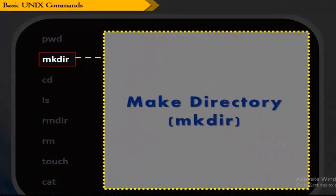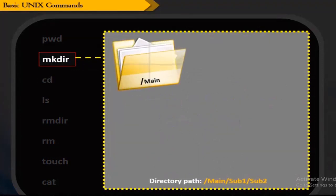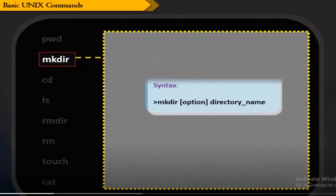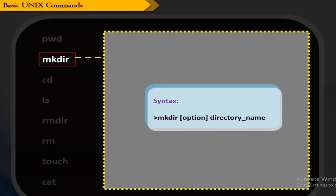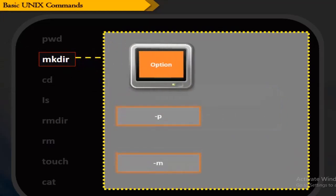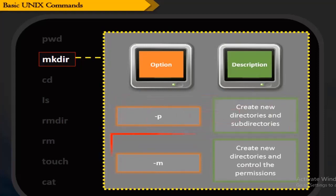Make directory is called mkdir. This command is used to create new directories and can also be used to create sub-directories. The syntax is: mkdir [directory name]. The -p option helps to create new directories and their consecutive sub-directories. The -m option helps to create new directories and control the permissions of the new directories.